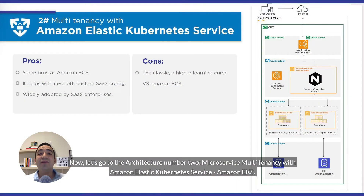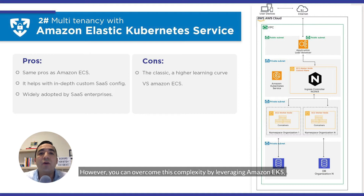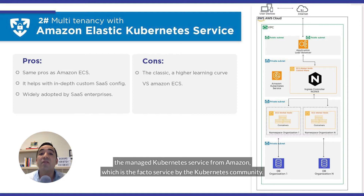Now let's go to architecture number two: microservice multi-tenancy with Amazon Elastic Kubernetes Service — Amazon EKS. Kubernetes is another alternative of microservice architecture, which adds an extra layer of complexity in the SaaS equation. However, you can overcome this complexity by leveraging Amazon EKS, the managed Kubernetes service from Amazon, which is the de facto service by the Kubernetes community.